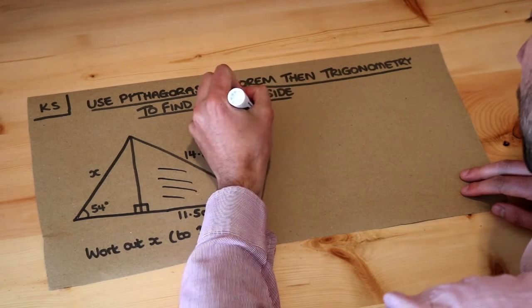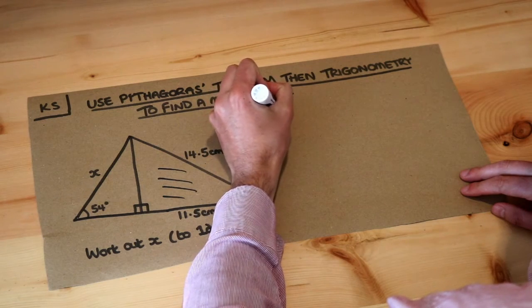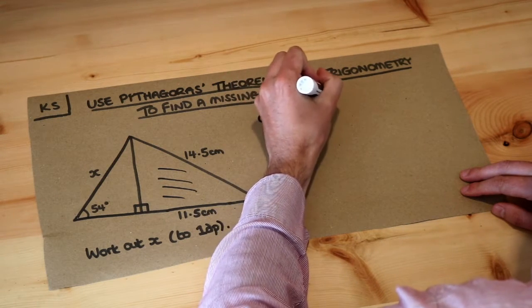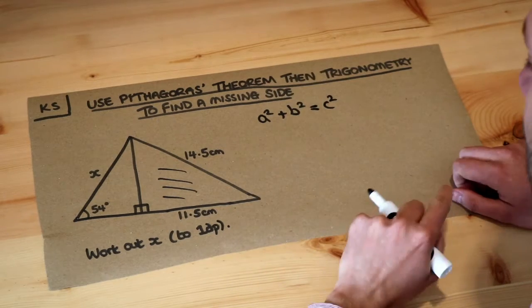So let's label the sides. Do you remember Pythagoras' theorem? a² + b² = c² where c is the hypotenuse.